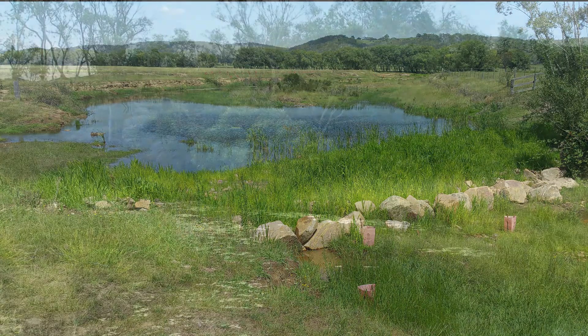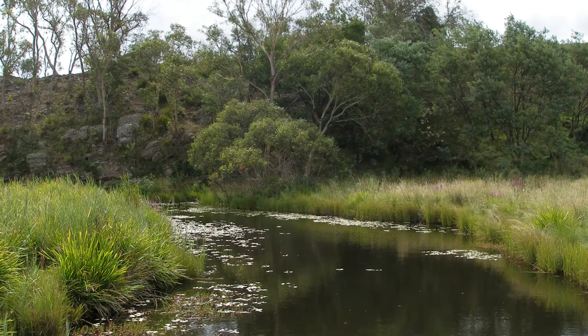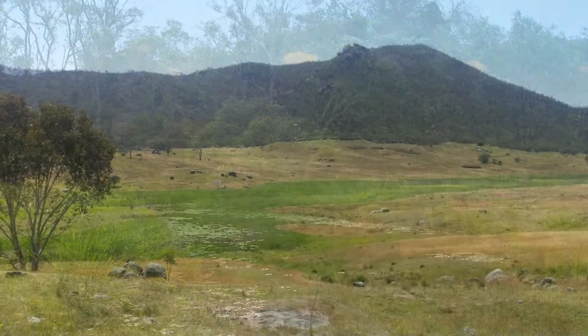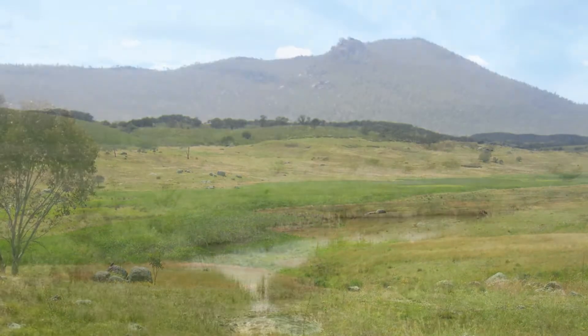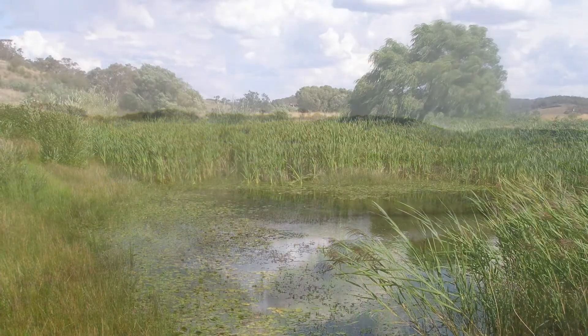Before Europeans arrived in Australia, water moved more slowly through the landscape. There were many wetlands, swampy meadows and chains of ponds.